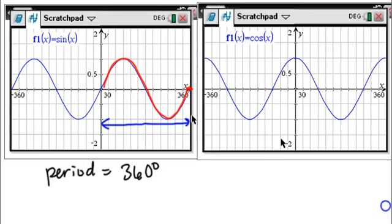You can see for the cosine that it has the same period. One complete cycle is one of these cup shapes from 0 to 360. So it also has a period of 360 degrees.